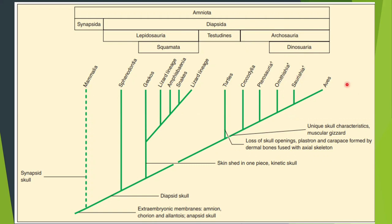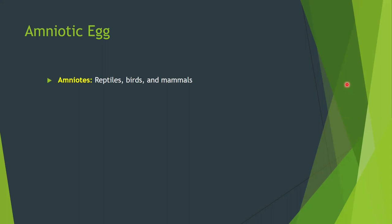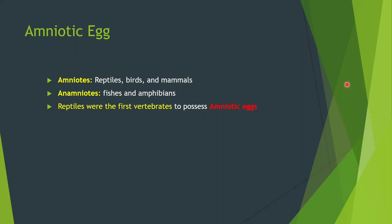Amniotes — reptiles, birds, and mammals — have extra-embryonic membranes; anamniotes — fish and amphibians — do not. Reptiles were the first vertebrates to possess amniotic eggs. The eggs in reptiles are of telolecithal type, meaning the yolk is restricted to only the vegetal pole of the egg.